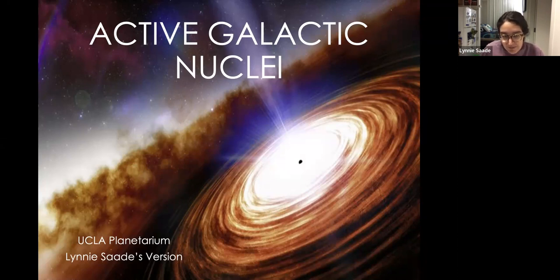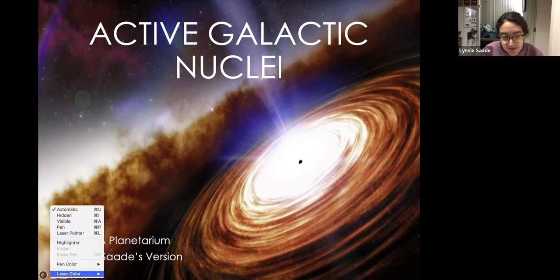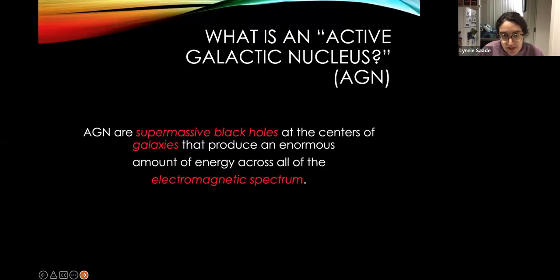So basically you might be wondering at this point, what is an active galactic nucleus? Active galactic nuclei are abbreviated as AGN by astronomers, and they are supermassive black holes at the centers of galaxies that produce an enormous amount of energy across all of the electromagnetic spectrum. Now you probably have heard of a galaxy before. They are the largest groupings of stars in the universe. And they are things like our own Milky Way galaxy that we live in and the nearby Andromeda galaxy and stuff like that.